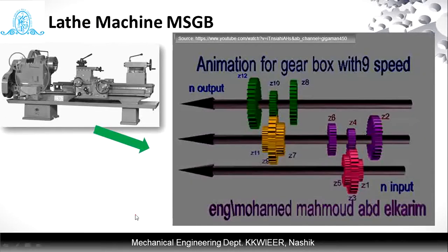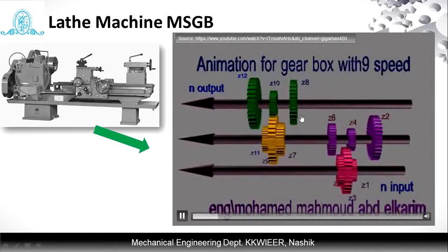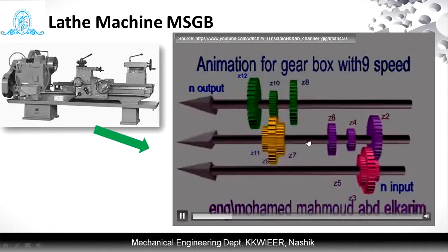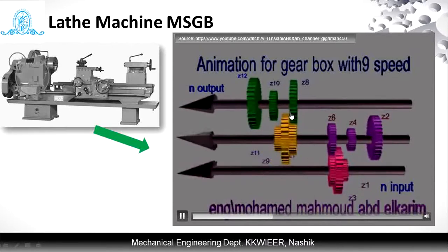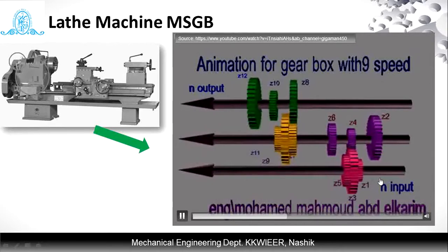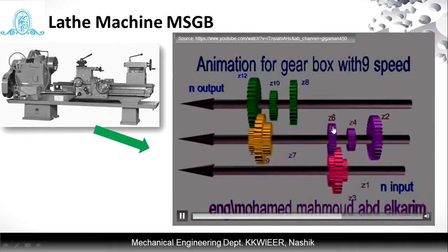How does this speed change occur? You can observe an animated 9-speed gearbox (available on YouTube). Two or three lines indicate the shafts, and the rotating gears connect at different contact points to give different speeds. Those gears are indicated as Z1, Z2, Z3, likewise till Z12. Based on the number of gears and shafts, we can classify different speeds. We will use the terminology Z to indicate how many speeds a gearbox provides.